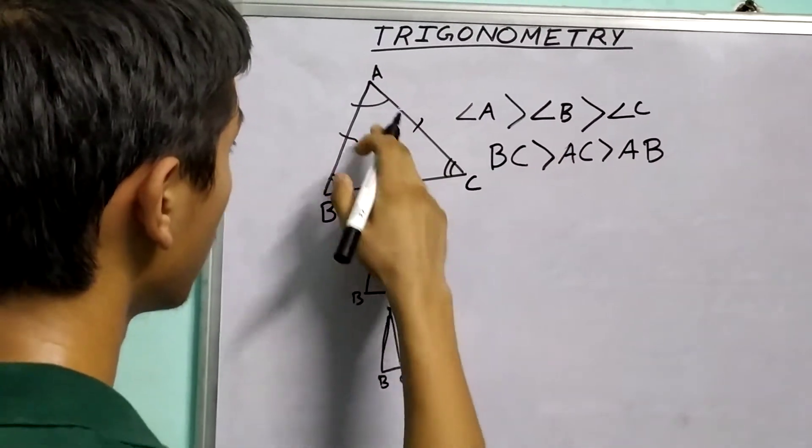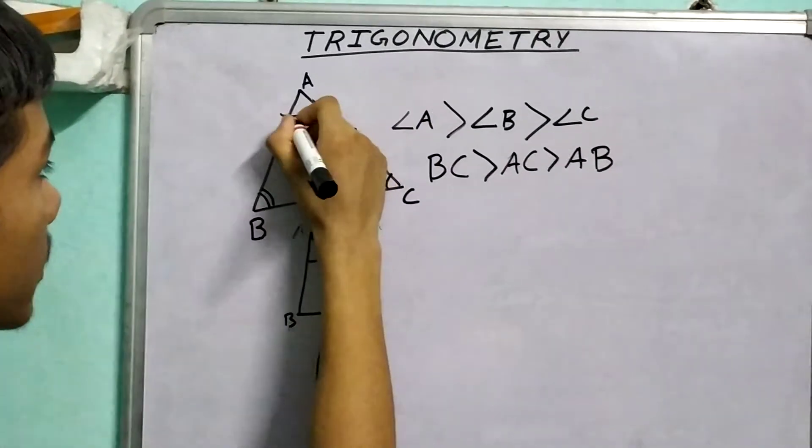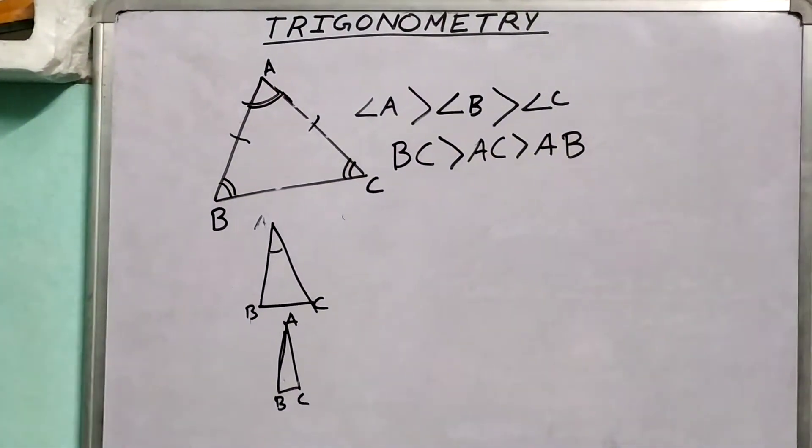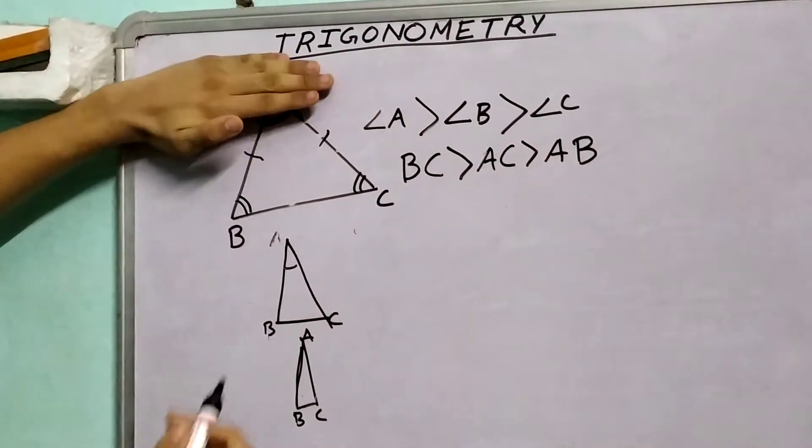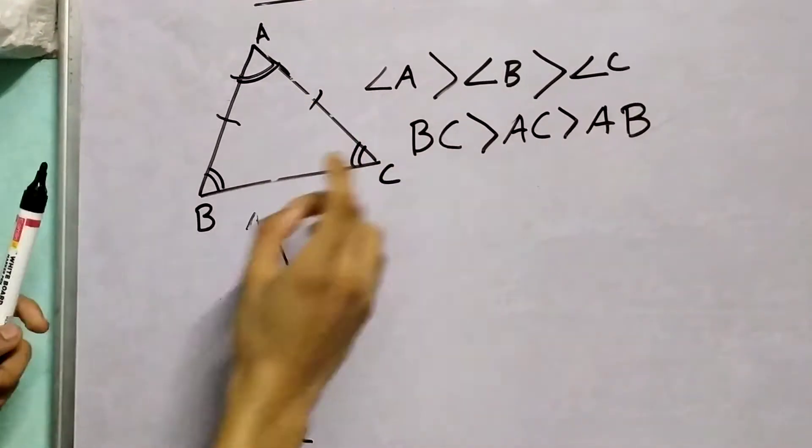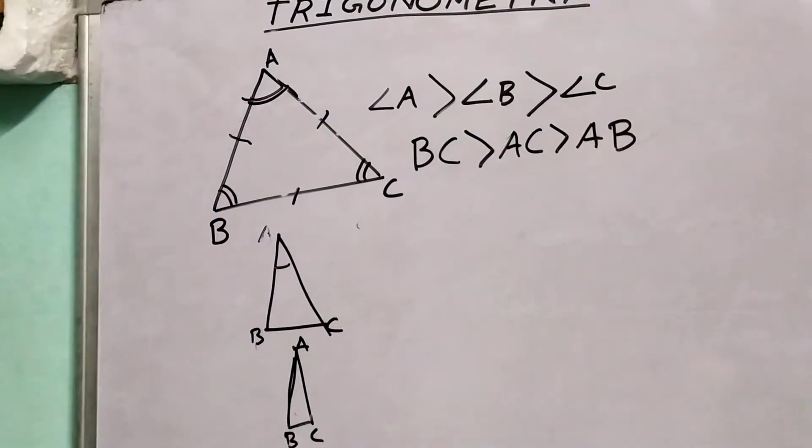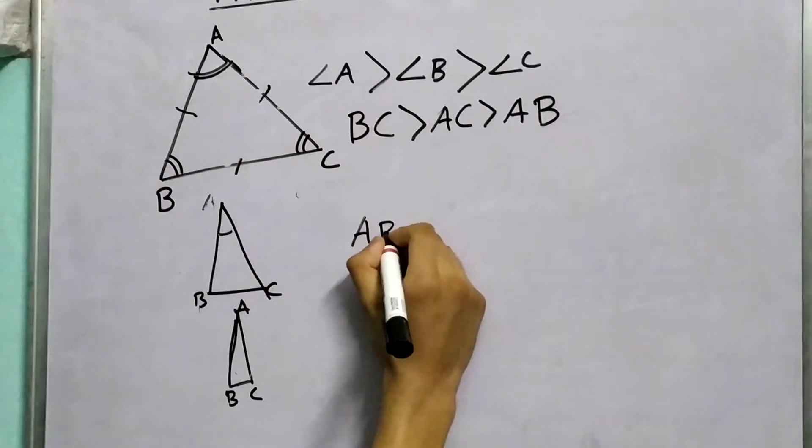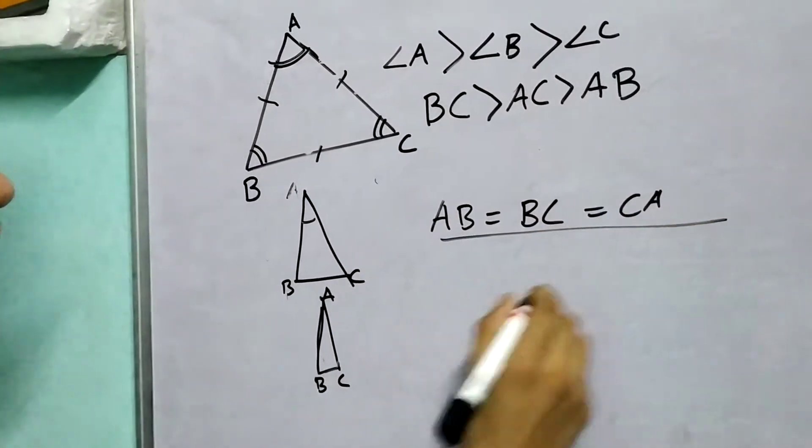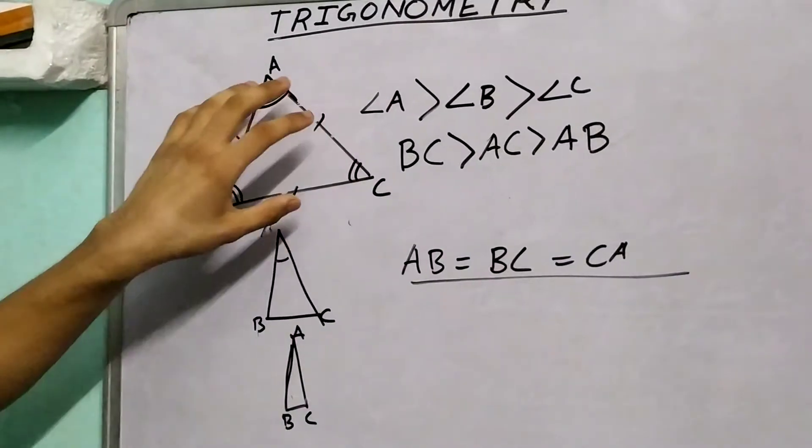Now let's take one more step further and consider when three angles A, B, C are equal. If we look from this side, angle B equals angle C, so these two sides are equal. If we look from angle C, these two sides will be equal because angle A and angle B are equal. So we get that AB equals BC equals CA. This special class of triangles where all angles are equal are known as equilateral triangles.